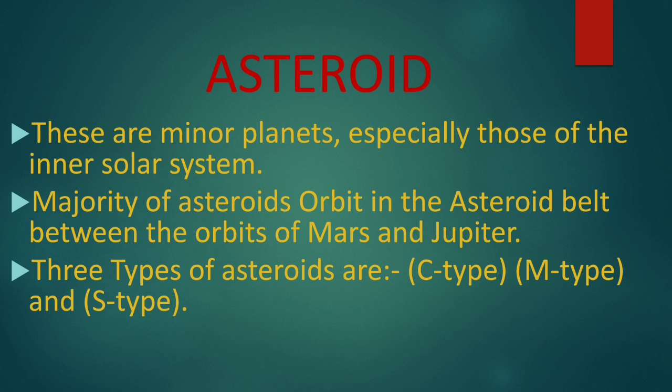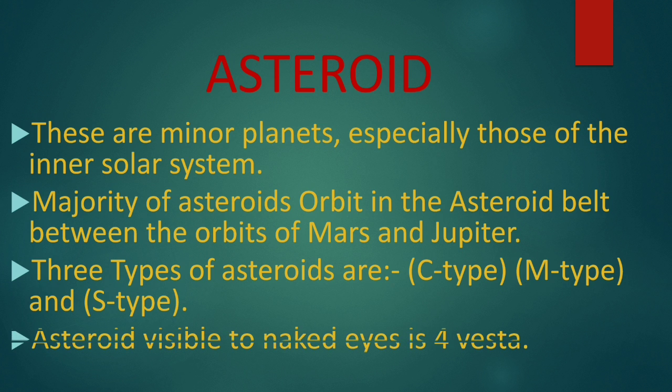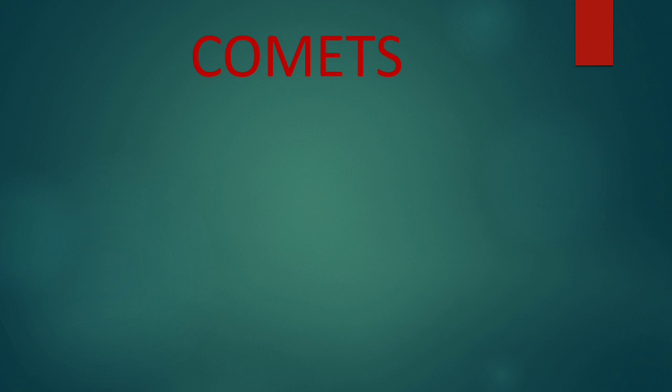M-type, which are rich in metals; and S-type, which are rich in silicate. Next, the asteroid Vesta is visible to our naked eyes because it has a reflective surface.